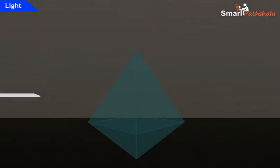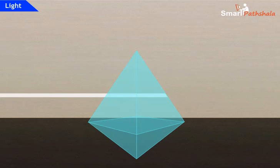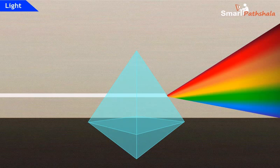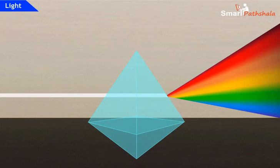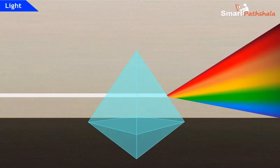Now let us perform an activity. Take a glass prism. Allow a narrow beam of sunlight through a small hole in the window of a dark room to fall on one face of the prism. Let the light coming out of the other face of the prism fall on a white sheet of paper. We can see colors similar to rainbow on the white paper. This experiment proves that sunlight consists of seven colors. It is said that the sunlight is white light, which means that the white light consists of seven colors.